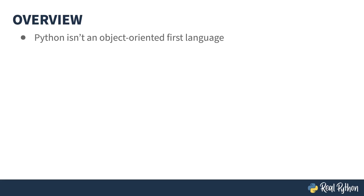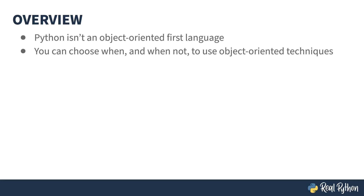Python's a bit of a weird beast, language-wise. Its history is firmly in the procedural-style scripting world, but it has flavors of functional programming and object-oriented coding inside of it. This means you can choose how much or how little you use object-oriented techniques when you code. It actually is very object-oriented underneath, but you don't have to use that mental abstraction if you don't want to.